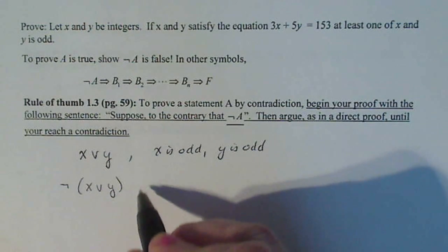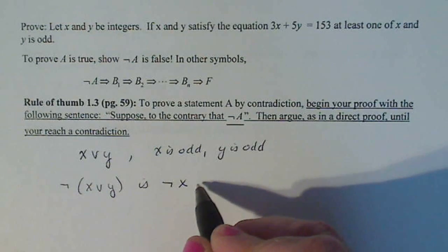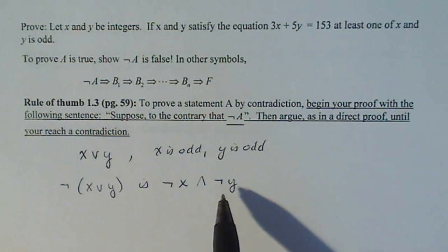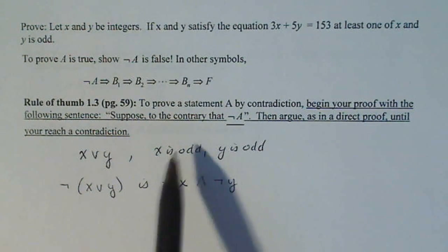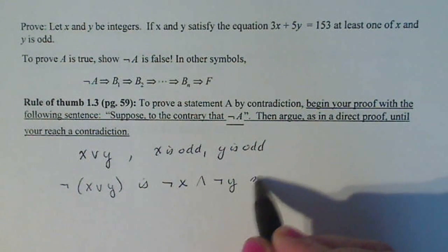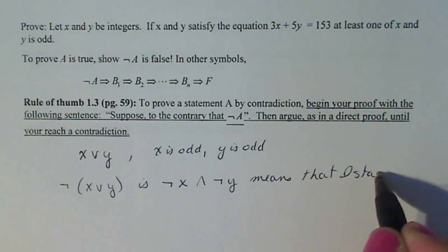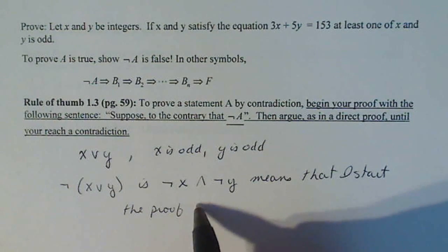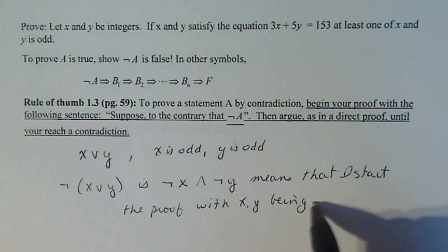So the negative of that simplifies to not x and not y. So if this is the case, how I start out this problem is assuming that both x and y are what? They're even. So this means that I start the proof with x and y being even numbers.